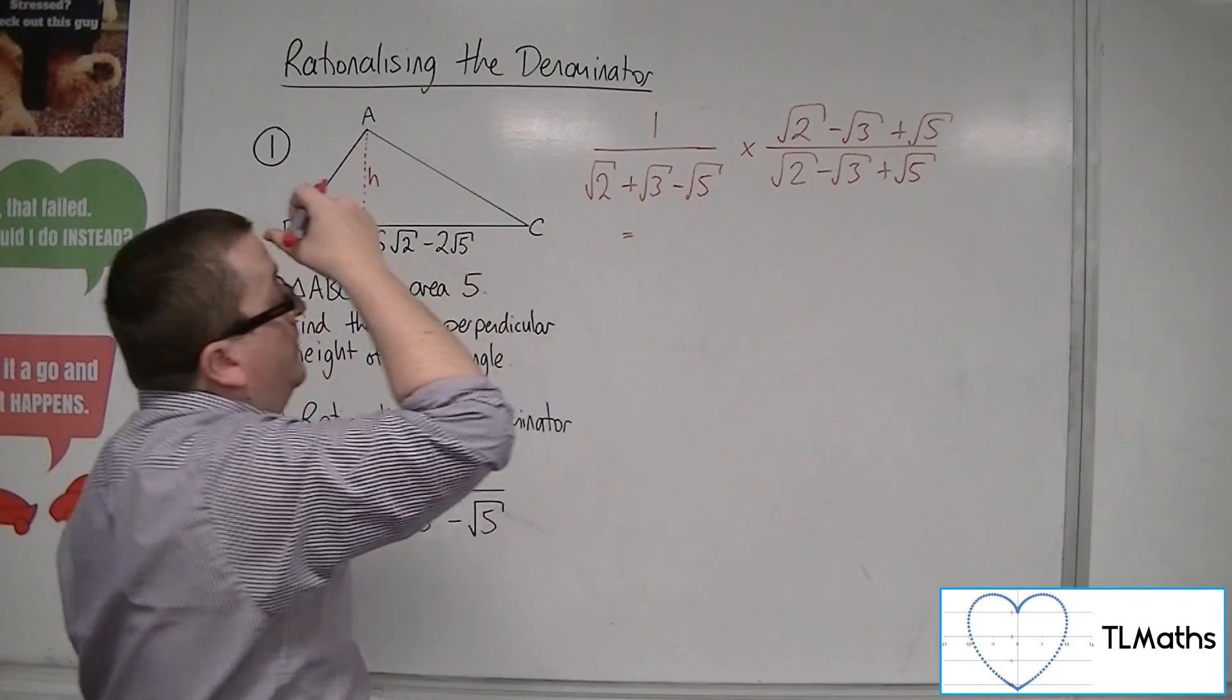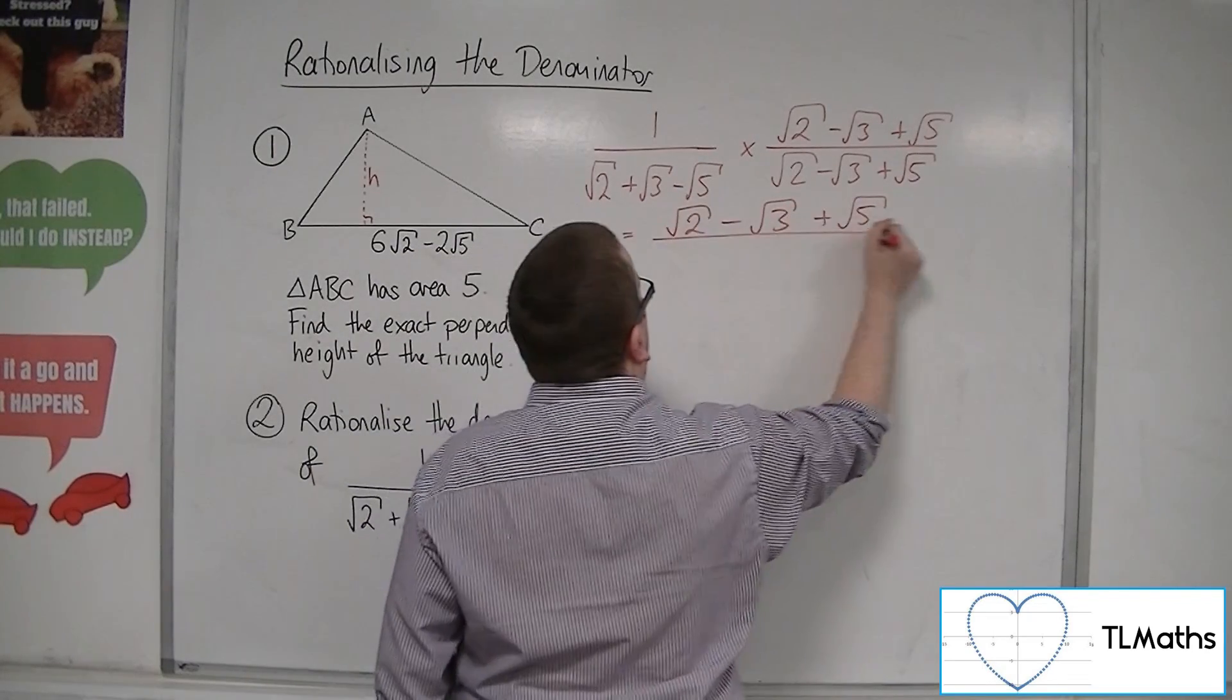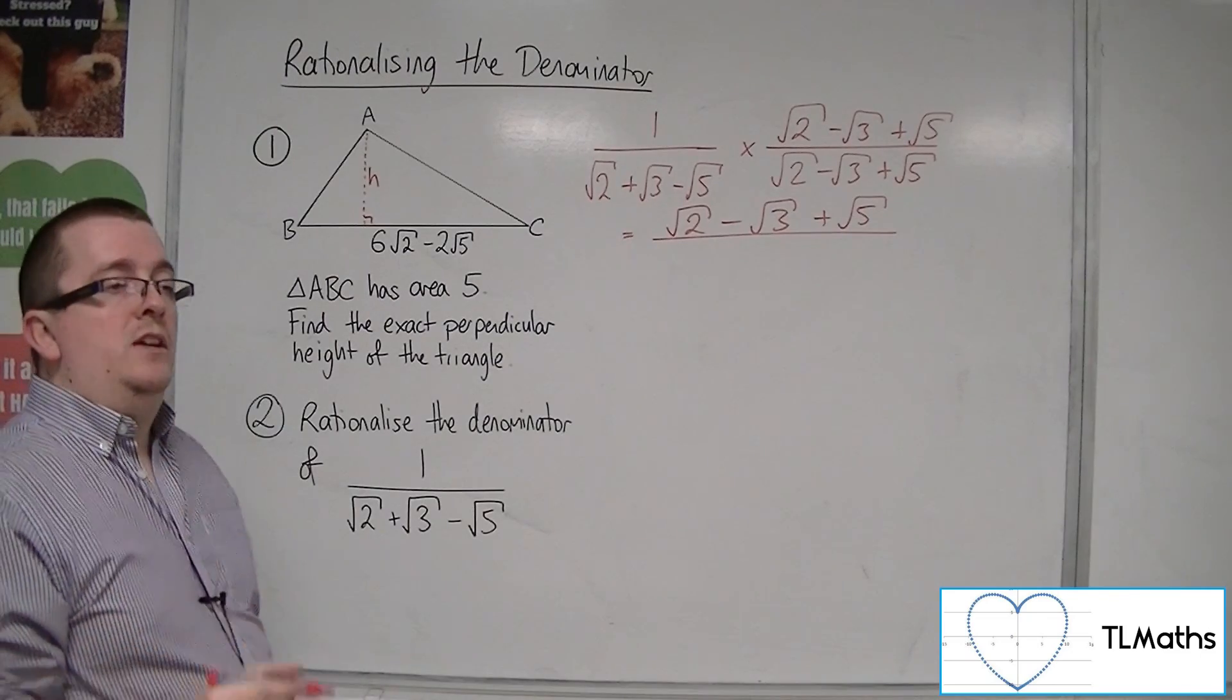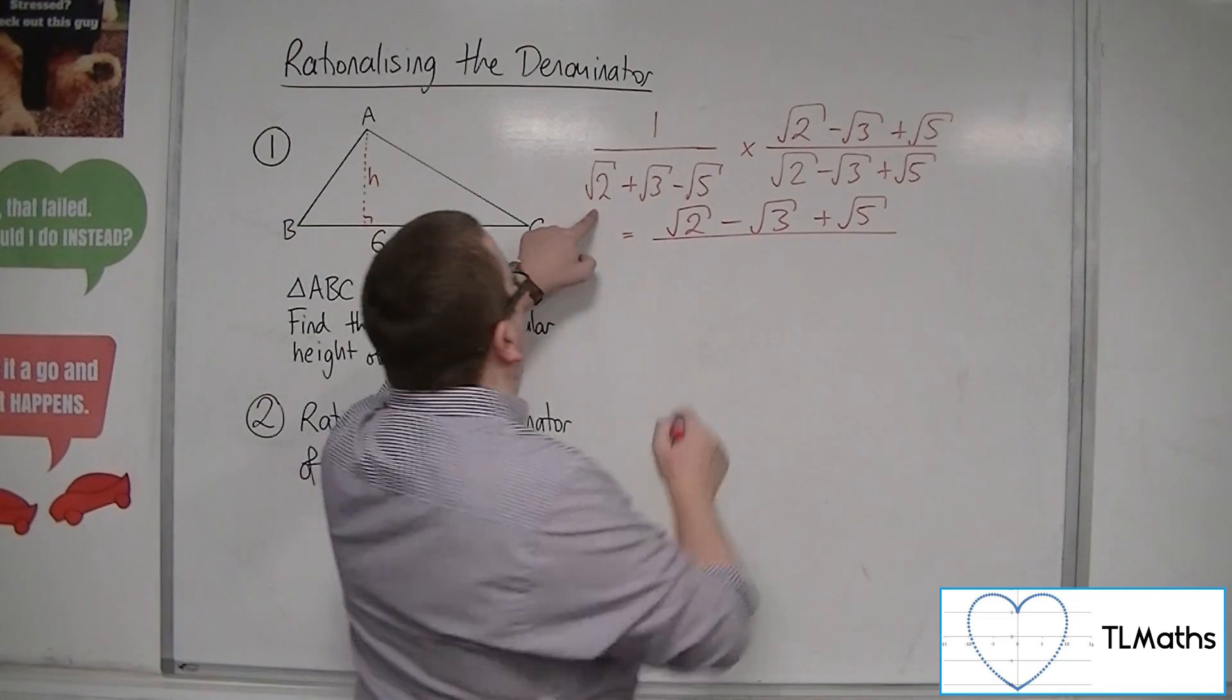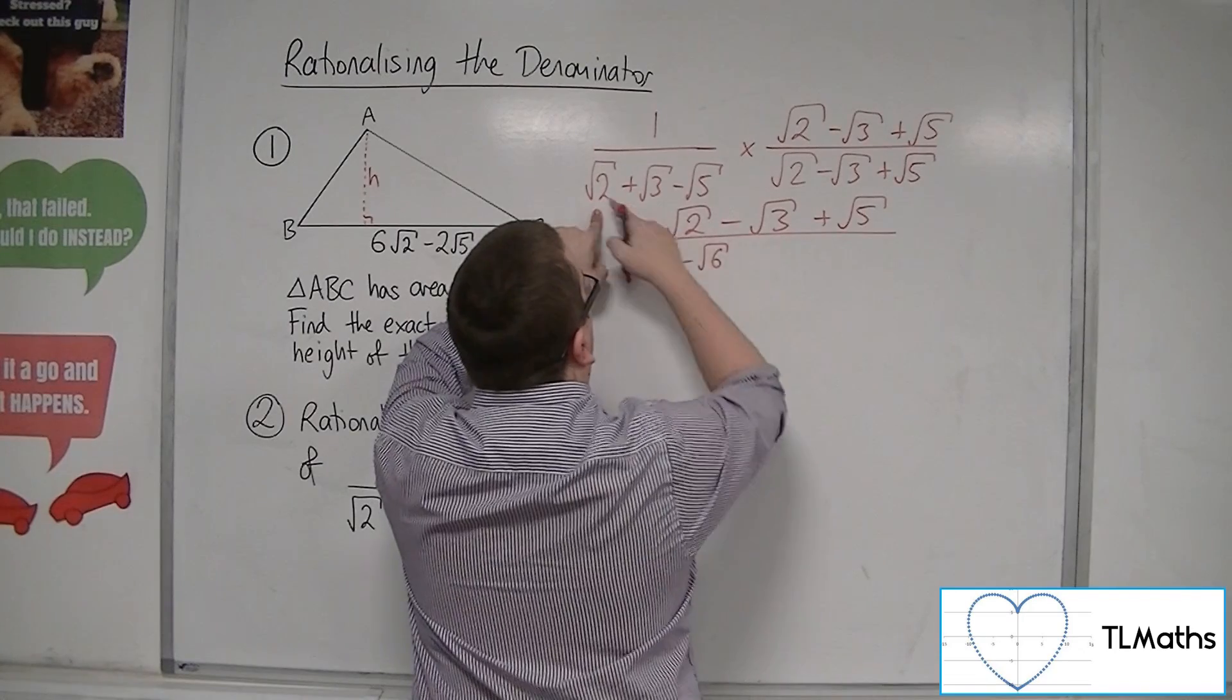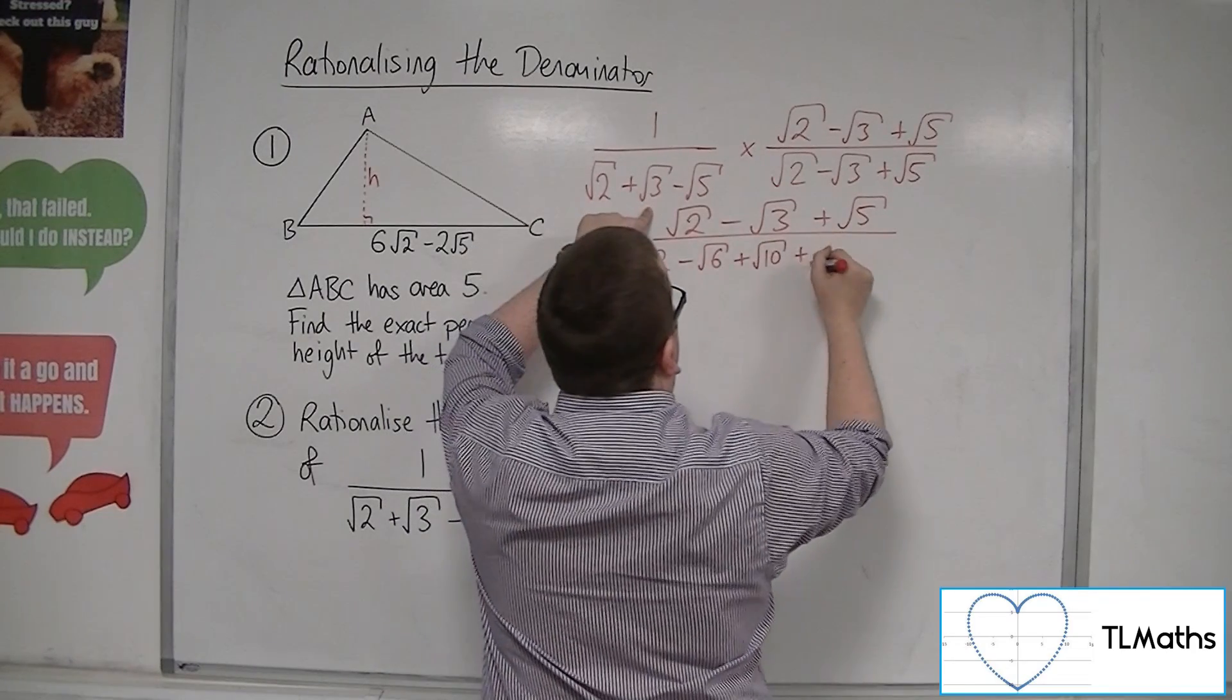Well, the numerator seems all right. That's nice and easy. So now we've got three terms multiplied by another three terms. Remember, everything's got to be multiplied by everything else. So, we're going to have root 2 times root 2, so 2. Root 2 times minus root 3, so minus root 6. Root 2 times root 5 is going to be root 10. Root 3 times root 2, so plus root 6.